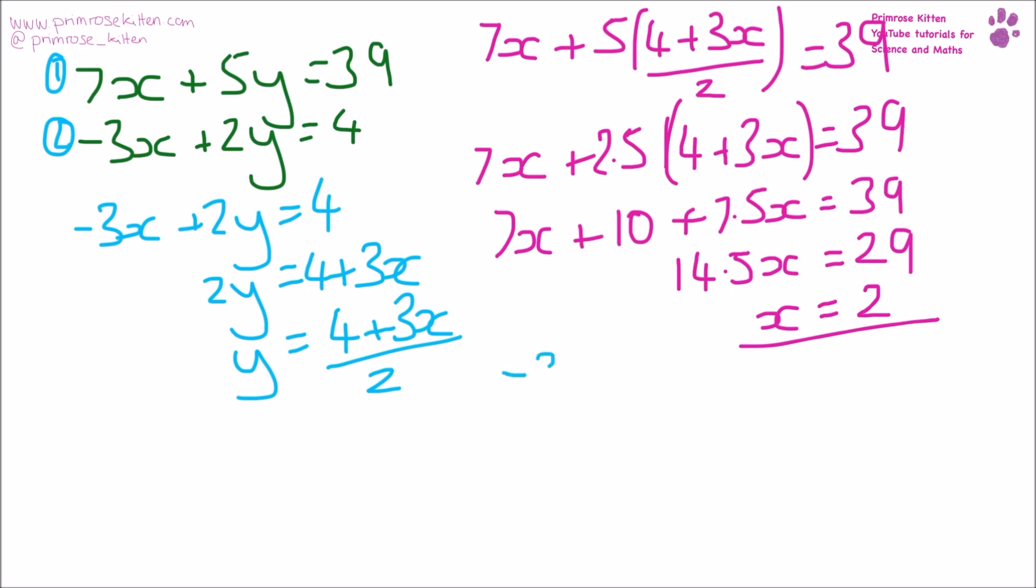We can pop that into the other equation. Minus 3x plus 2y equals 4. So minus 3 times 2 is minus 6 plus 2y equals 4. 2y equals 4 plus 6, that gives us 10. So y equals 5.